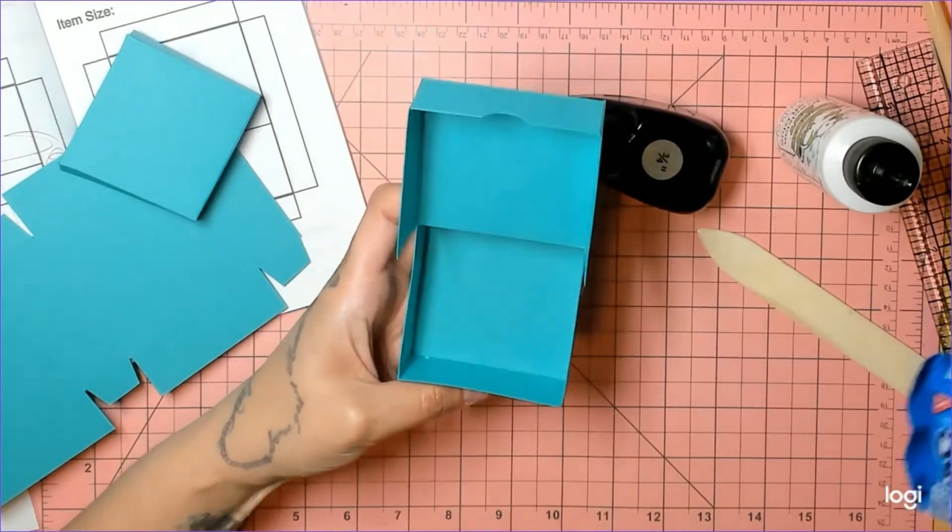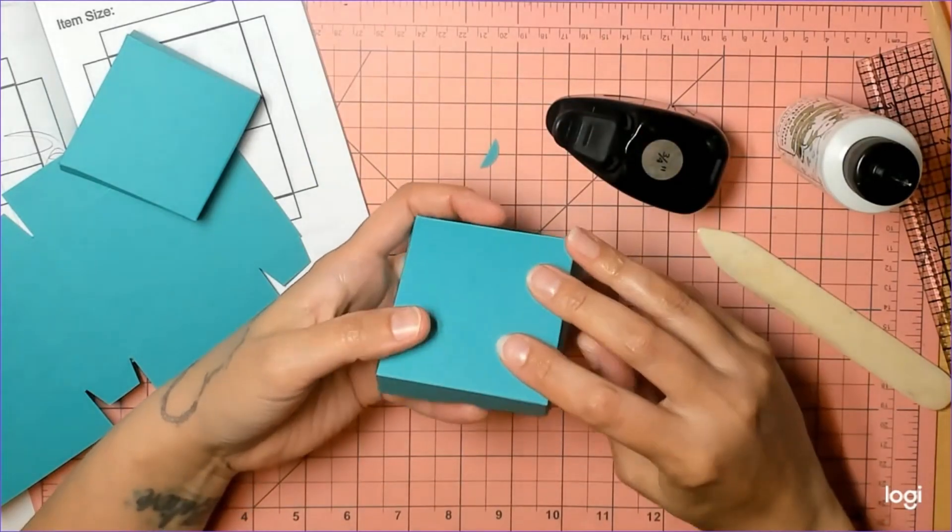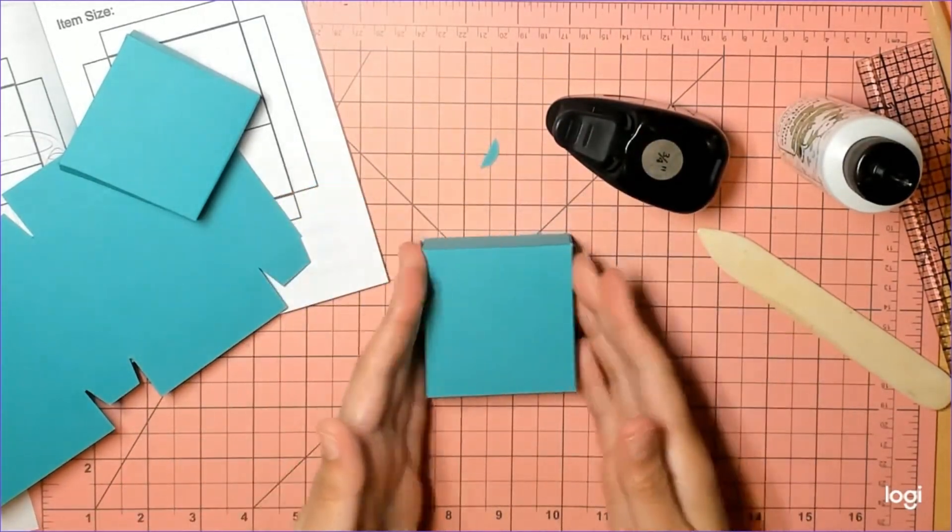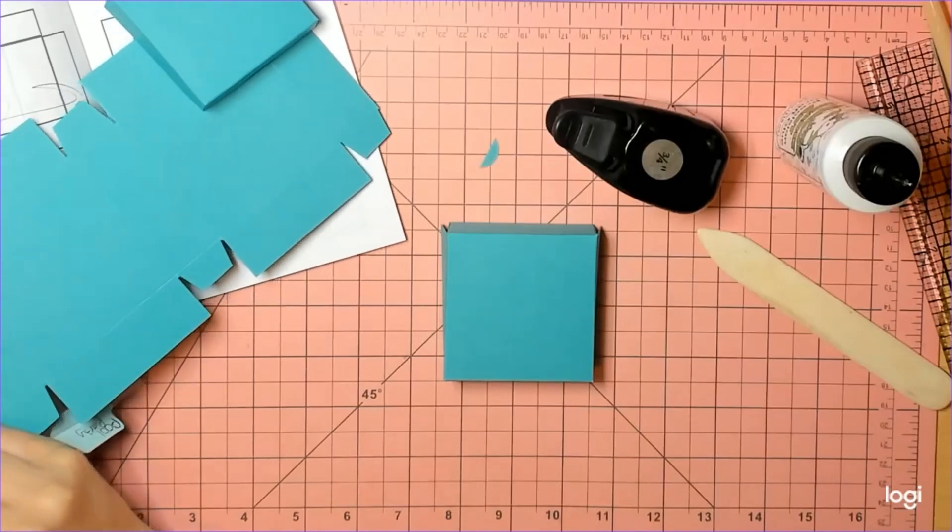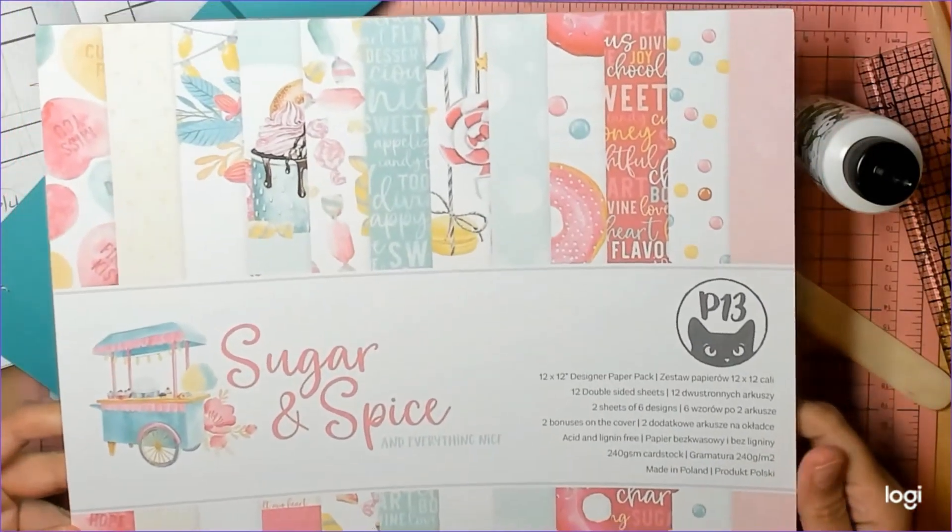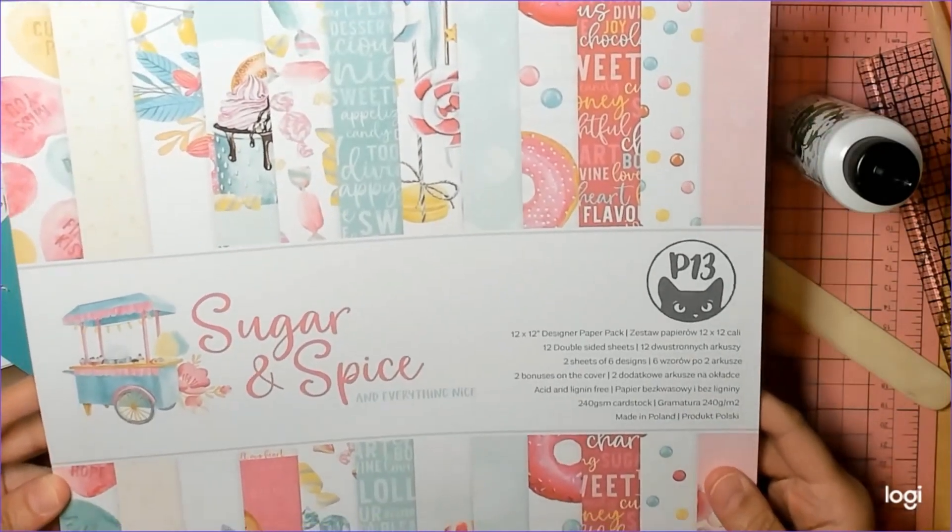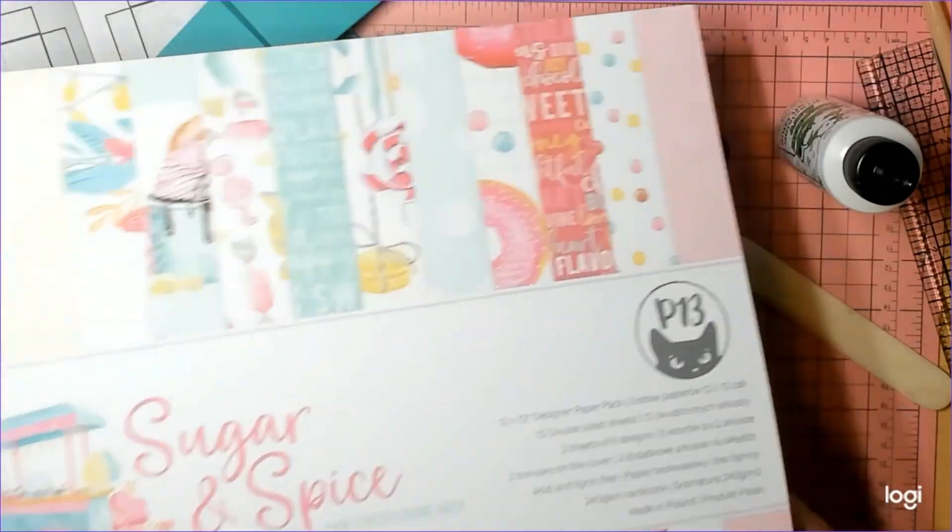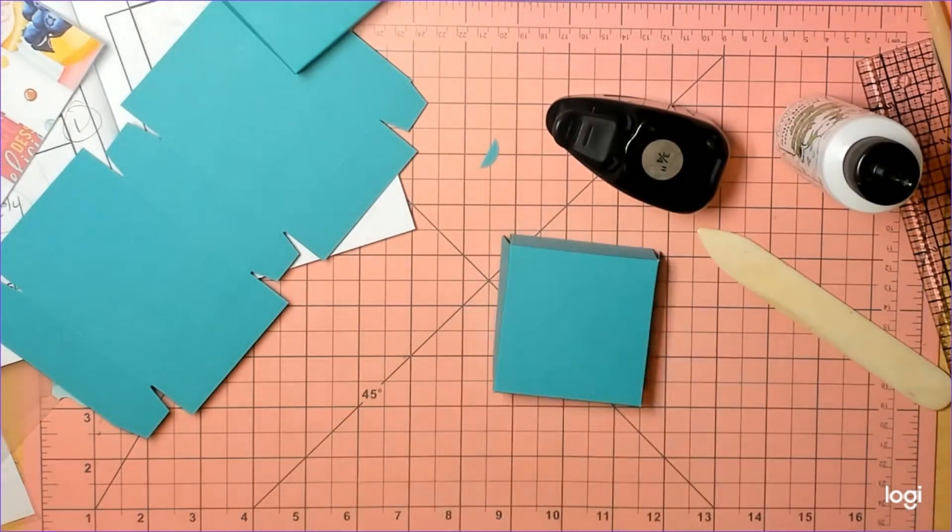Let's go ahead and put our cookies in there, and that is perfect. It looks super cute, and you're going to decorate it however you want. I'm going to use the P13 Sugar and Spice, probably the 6x6 pad—this is the 12x12, but I'll probably use the 6x6 and decorate it some super cute way. Alright guys, thanks for watching. Bye!